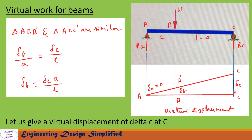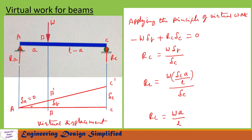Now let us give a virtual displacement of delta_c at C, so the beam assumes the position A, B-prime, C-prime. Here we form two similar triangles: A-B-B-prime and A-C-C-prime. Displacement at C is delta_c and displacement at B is delta_b. Using these two similar triangles we can write delta_b divided by a equals delta_c divided by L, so delta_b equals delta_c times a over L. Delta_a equals zero at point A.